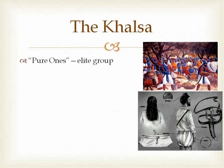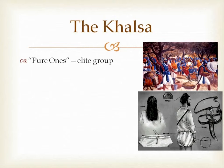The Khalsa is an elite group that follows a very strict lifestyle and are considered guardians of the faith. The first group was evidently chosen by the tenth guru, Gobind Singh. He asked for volunteers willing to give up their lives to become part of this elite group. One by one, five volunteers agreed to enter a tent. As each went in, the others heard the sound of a sword and a head falling. After all five went in, the curtain was drawn back to show all five alive.